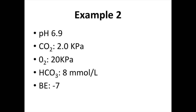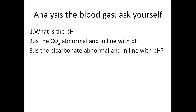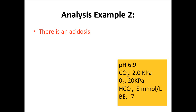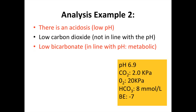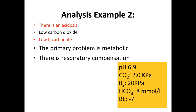Example 2: pH 6.9, carbon dioxide 2, bicarbonate 8, and a base excess of minus 7. Ask yourself the questions: what is the pH? Is the carbon dioxide abnormal and in line with the pH? Is the bicarbonate abnormal and in line with the pH? There is an acidosis, but the carbon dioxide is low, so it's not a respiratory acidosis. There is a low bicarbonate, which is in line with the acidotic pH, making it metabolic in nature. The primary problem is metabolic, and there is respiratory compensation because the carbon dioxide is low.